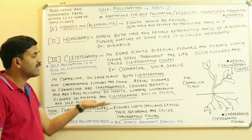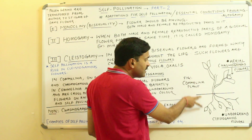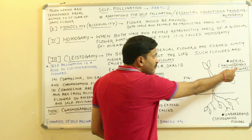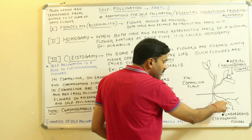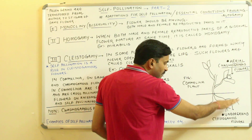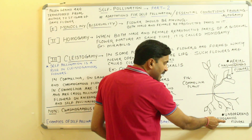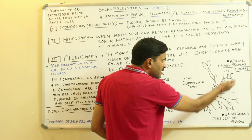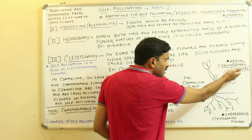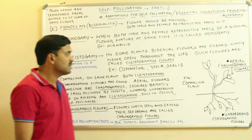Because the underground flowers are dull in color and are underground, they will not be pollinated by insects — they will be self-pollinated. So in a single Commelina plant, the aerial chasmogamous flowers are brightly colored and show cross-pollination with the help of insects, while the underground cleistogamous flowers are dull in color, never open, and therefore show self-pollination.